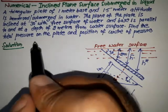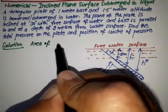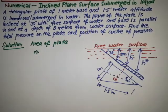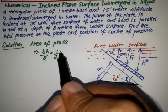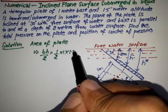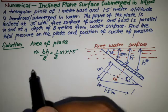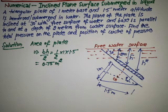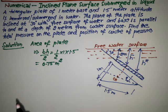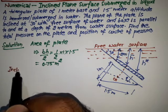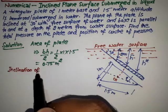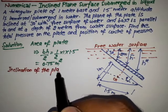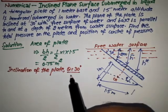For solving this numerical, first we need the area of the plate. Since this is a triangular plate, the area equals base times height divided by 2, that is (1/2) × 1 × 1.5, which gives us 0.75 square meters. The inclination of the plate, angle theta, is given as 30 degrees.